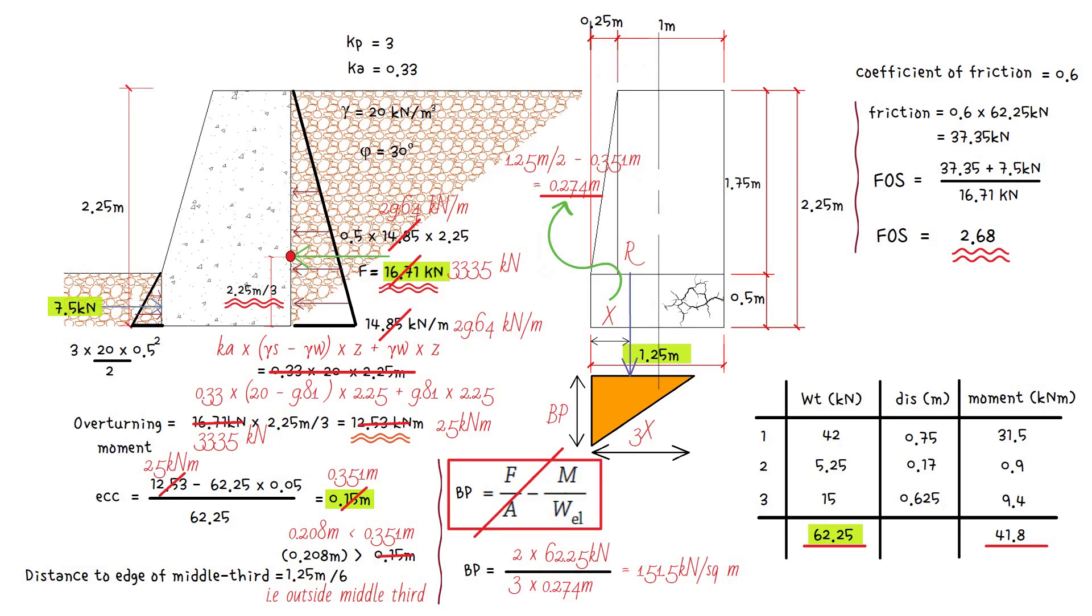However, the member has not yet collapsed even though a tension crack has formed. A tension crack is unacceptable for two reasons. Firstly, the material immediately above the crack is also put into tension and hence may also crack. Secondly, the repeated action of frost and debris entering the crack can cause progressive leaning of the structure.